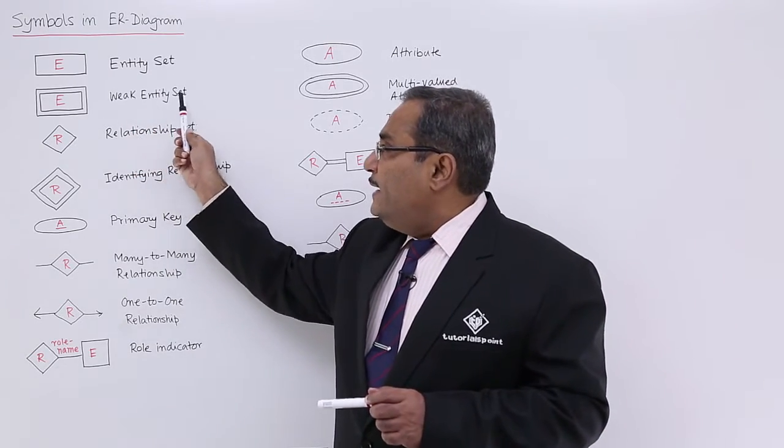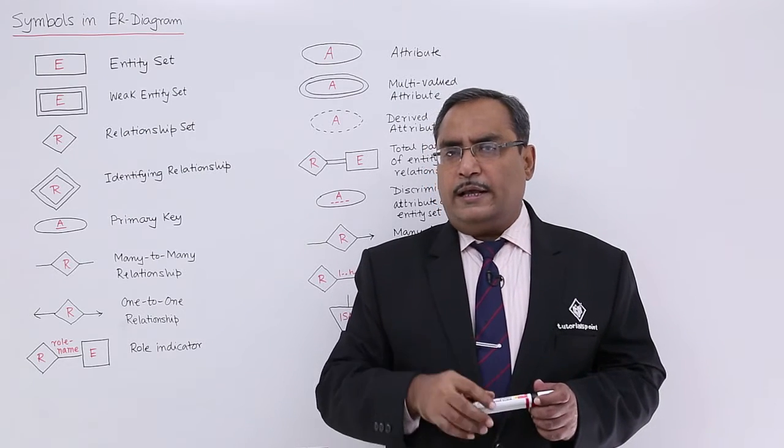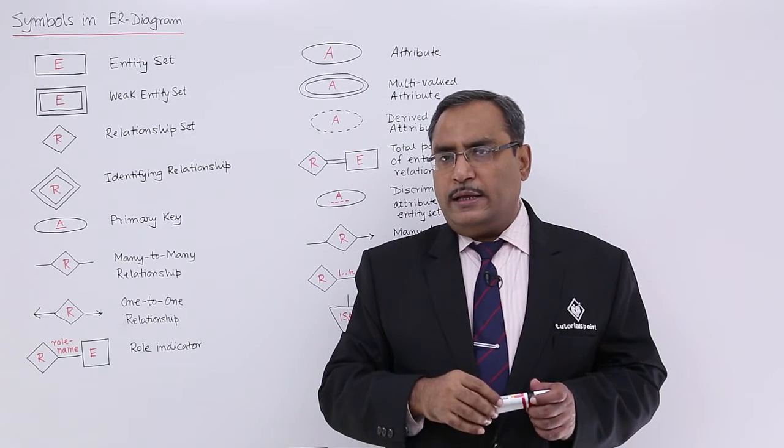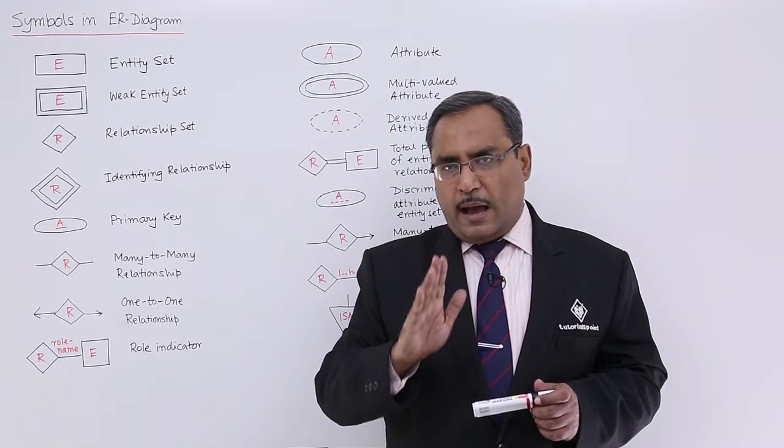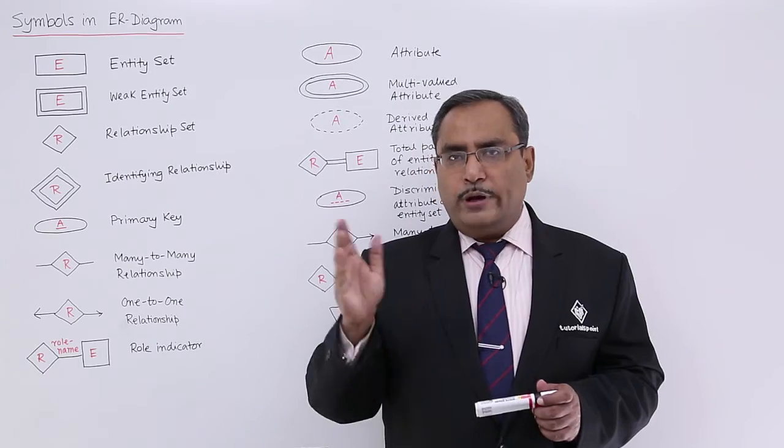This is the weak entity set. Weak entity sets do not have any kind of primary key. They have a partial key. We shall have a separate video where we discuss weak entity sets in more detail.